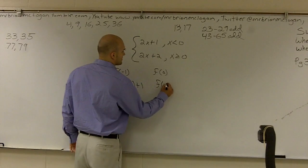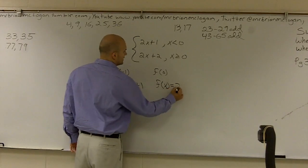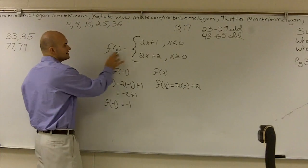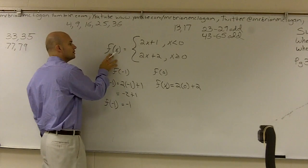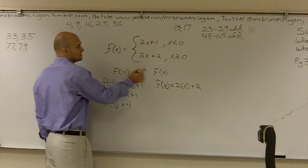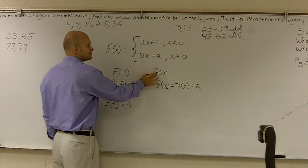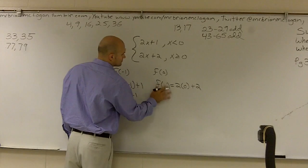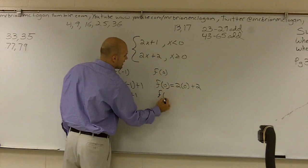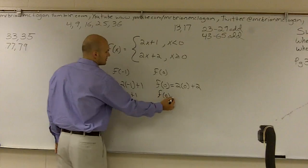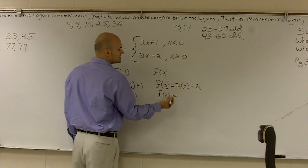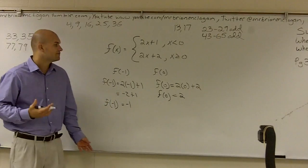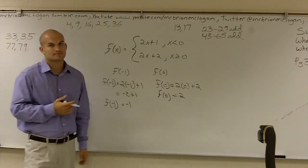So f of 0 equals 2 times 0 plus 2. We're evaluating the piecewise function for x, so I just plug 0 into the x. Therefore, f of 0 equals 2 times 0, which is 0, plus 2, which becomes 2. That is how you evaluate a piecewise function for two different values.